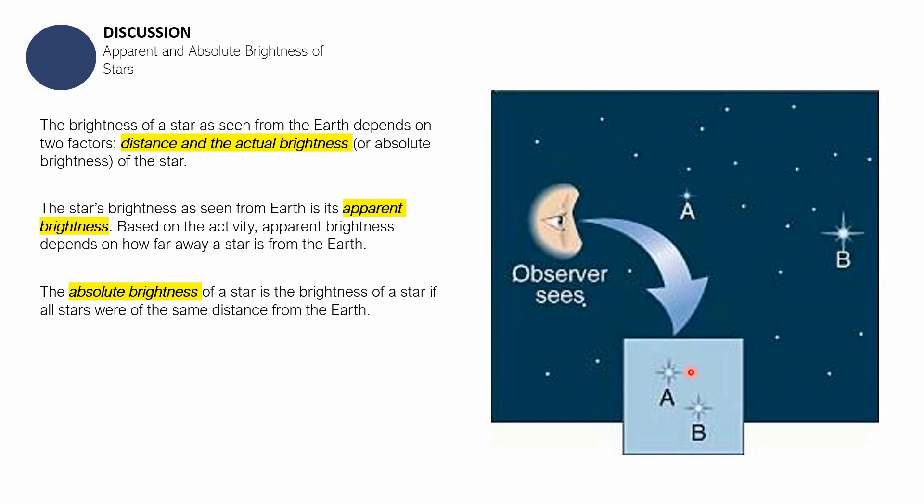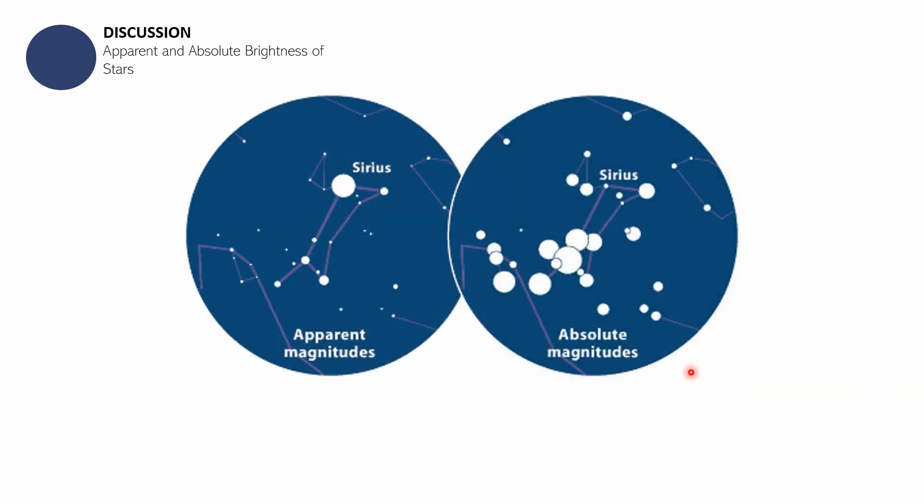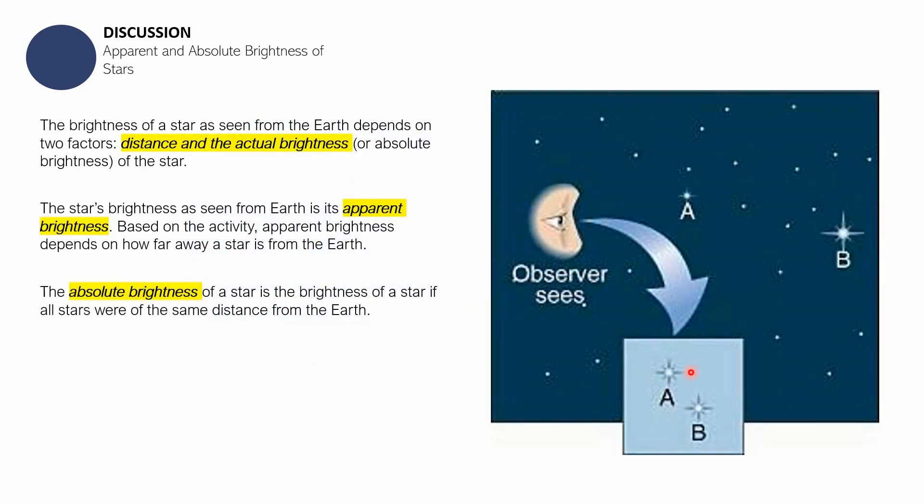The absolute brightness of a star is its actual brightness. Kung halimbawa, pareho-pareho yung distance ng mga stars sa planet earth, ibig sabihin we will observe yung talagang true brightness talaga nila. The actual brightness of a star is called its absolute brightness. The brightness of a star as we see it from earth, that is called apparent brightness.